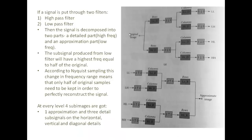Looking at the same thing again — I have an image and apply the low pass filter and the high pass filter on the rows. The signal is decomposed into a detailed part and an approximation part. The sub-signal produced from the low pass filter will have the highest frequency equal to half the original. Hence, according to the Nyquist sampling theorem, this change in the frequency range means that only half of the original samples need to be kept to perfectly reconstruct the signal.